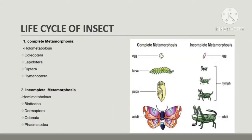Insects have two life cycles: complete metamorphosis and incomplete metamorphosis. Metamorphosis is the change in body form and habits during the development cycle of animals. These are two growth types of insects where the body form changes during the life cycle.